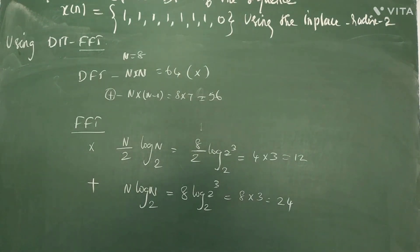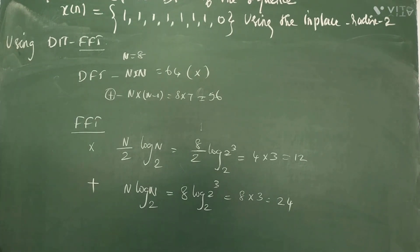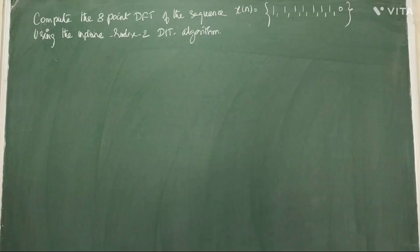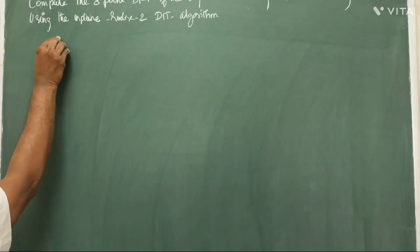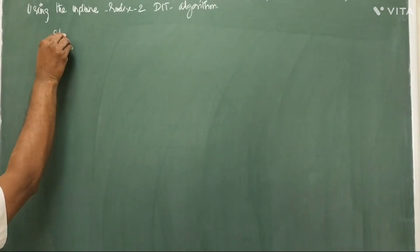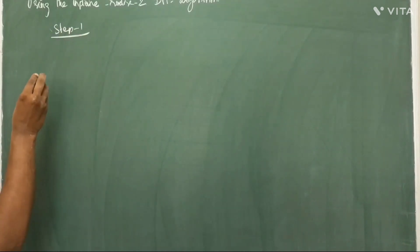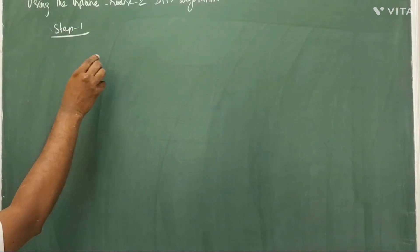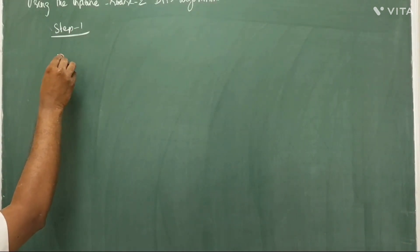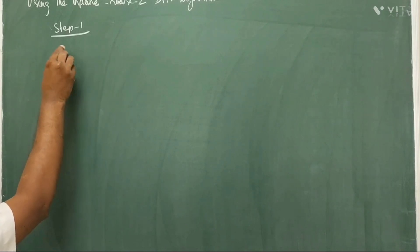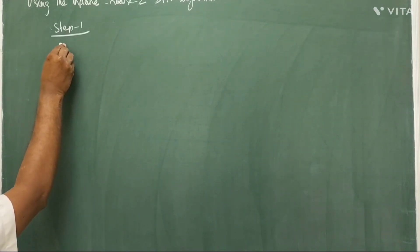Now, how to compute this 8-point sequence using the DIT FFT? Step 1 is writing the input sequence in the bit-reversal order. The total number of samples goes from index 0 to 7, and we write the binary representation of each index.